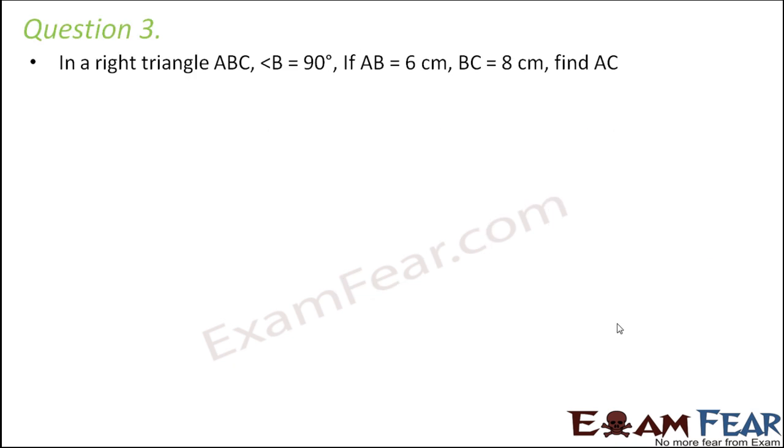Question number 3. In a right angle triangle ABC, angle B is equal to 90 degree, AB is equal to 6 cm, BC is equal to 8 cm. Find AC.